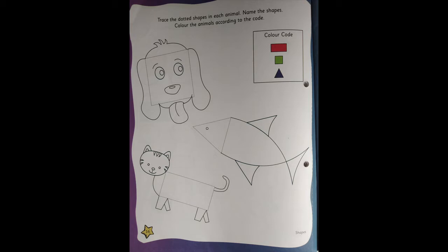First, I will read the instructions given on the page. Trace the dotted shapes in each animal. Name the shapes. Color the animals according to the code.